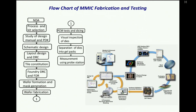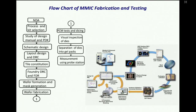If we try to simplify it a bit, this is how it is done physically. You start with an NDA — a non-disclosure agreement — because the foundry will be sharing proprietary information with you, and you are not allowed to share some of it. Then process and kit selection, study of the design manual and PDK. PDK means a process design kit. Essentially, when you plug a PDK into your circuit analysis software, it allows you to use the technology the foundry will be using for manufacturing.